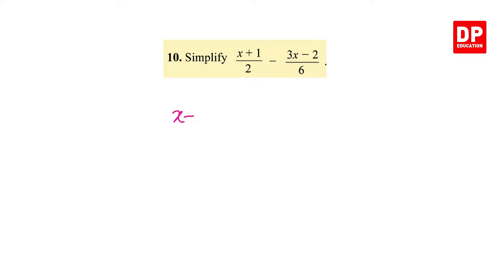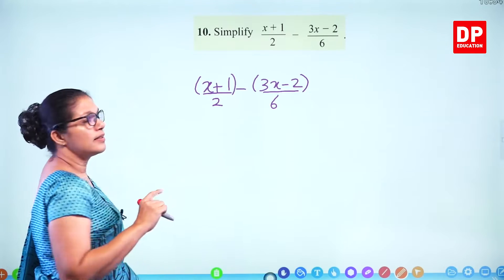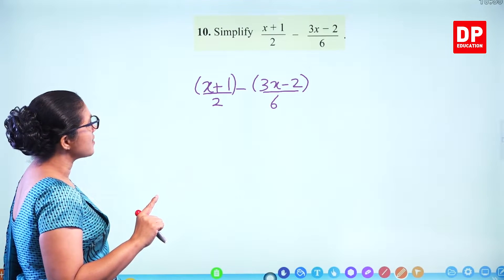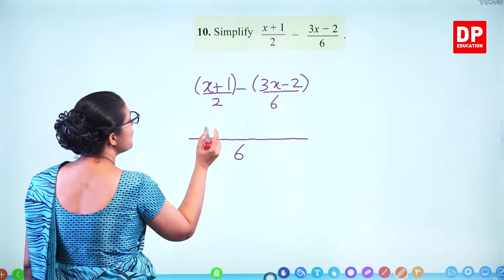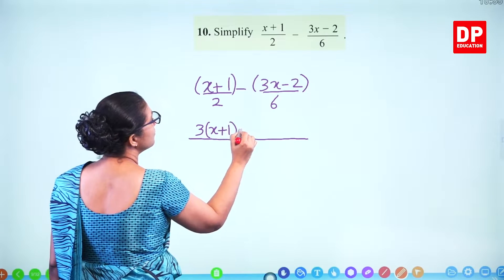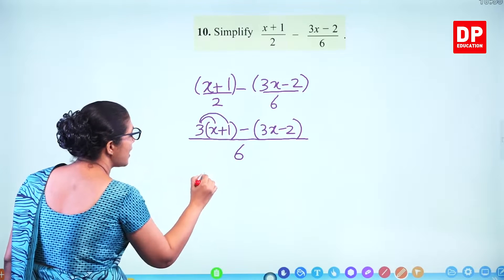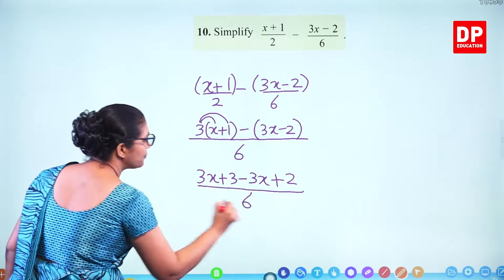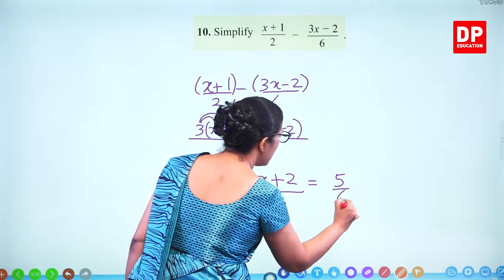Simplify: (x plus 1) over 2 minus (3x minus 2) over 6. There is a minus sign — make sure you put brackets, otherwise you will forget to multiply by minus. Convert to the same denominator of 6, the lowest common multiple. Multiply the first term by 3: you get 3(x plus 1) over 6 minus (3x minus 2) over 6. Expand: 3x plus 3 minus 3x — and minus minus becomes plus 2. The 3x terms cancel out, leaving 3 plus 2, which is 5. So the answer is 5 over 6.